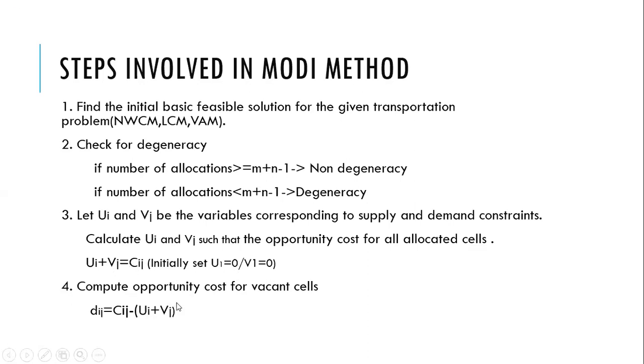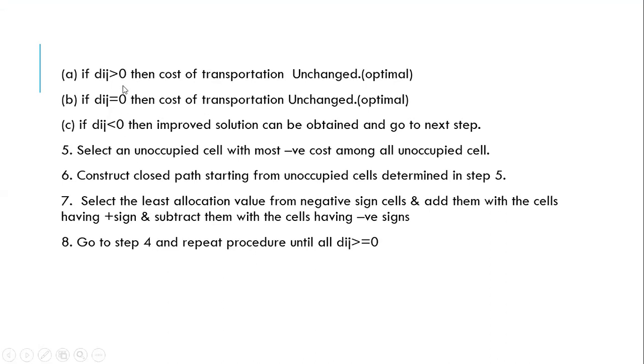And for all unallocated cells or for vacant cells we have to use this particular formula to compute the cost. That is dij is equal to cij minus ui plus vj. So once we apply this particular formula for all vacant cells there can be three conditions.